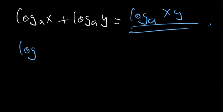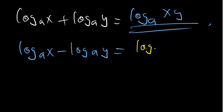What if we have log base A of X minus log base A of Y? If you have a minus sign, you divide instead of multiply. The one with a positive sign goes on top and the one with a negative sign goes on the bottom, giving log base A of (X/Y).